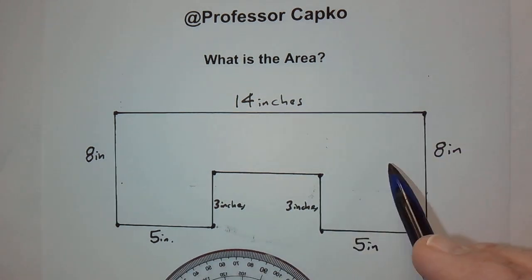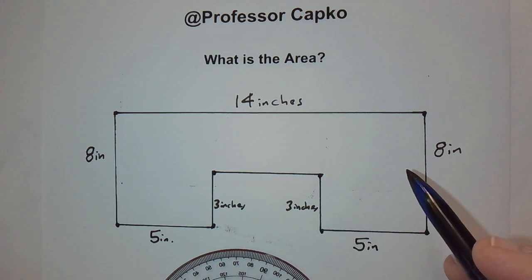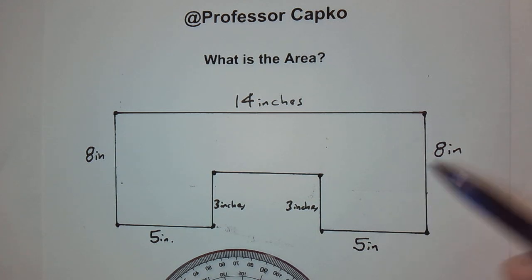You see an area question such as this one, and if you look at your formulas for area for different objects, you may see a square, a rectangle, a circle, things like this.